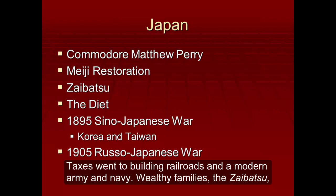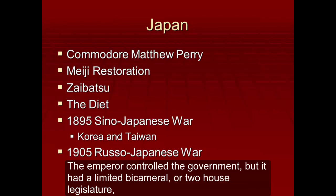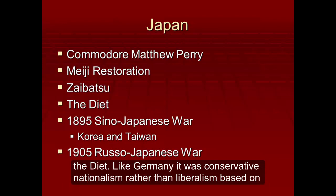Wealthy families, the Zaibatsu, dominated the heavy industries in Japan — not true capitalism. The emperor controlled the government, but it had a limited bicameral, or two-house, legislature: the Diet. Like Germany, it was conservative nationalism rather than liberalism based on individual rights.